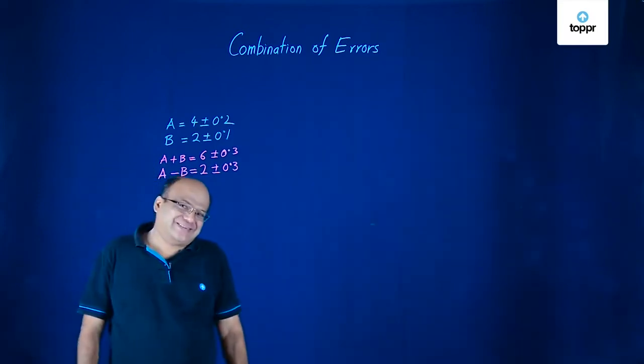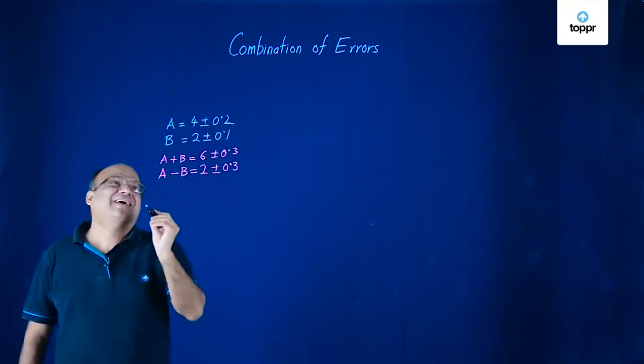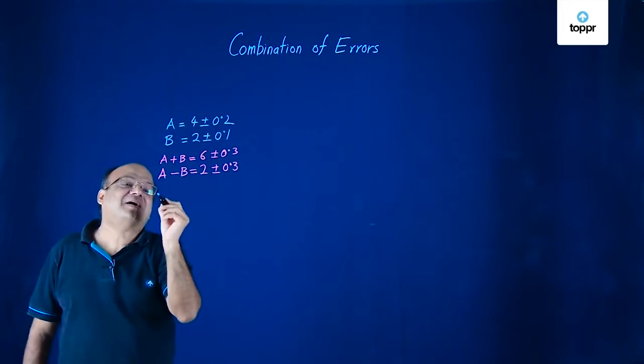Now what will be AB? For AB you cannot multiply this. Remember that, errors you cannot multiply.